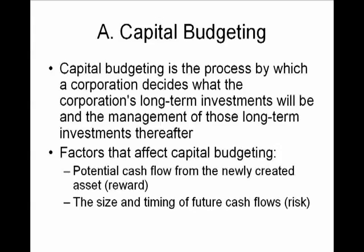Topic A: Capital Budgeting. Capital budgeting is the process by which a corporation decides what the corporation's long-term investments will be, and the management of those long-term investments thereafter. The fundamental premise is to invest in long-term assets that will return more cash flow than the cost to create those assets. The financial managers take into account potential returns on the assets once completed and the risks associated. The nature of the business will be a major factor in what type of capital budgeting decisions are made. For example, a real estate home builder will want to figure out if they should build more homes, and where they should be built.